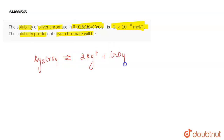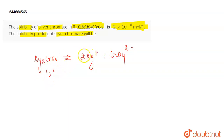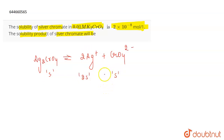If the solubility of silver chromate is s, when it dissociates to give 2 Ag⁺, the solubility of Ag⁺ will be 2s, and the solubility of CrO₄²⁻ will be s.